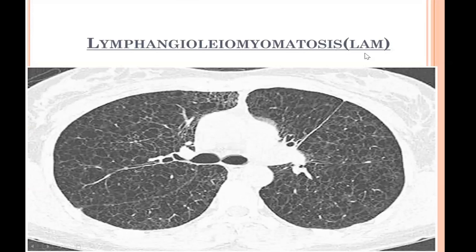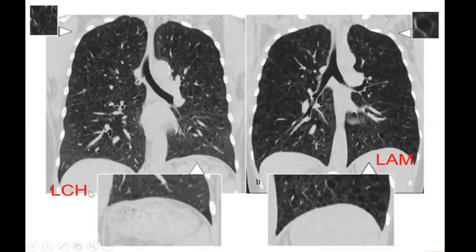Lymphangioleiomyomatosis is a condition commonly seen in females and in patients with tuberous sclerosis, producing multiple thin-walled cystic spaces distributed throughout the lung parenchyma including the lung bases and costophrenic angles. Comparing Langerhans cell histiocytosis and LAM: LCH shows irregular, bizarre-shaped cysts in the upper and middle lobes with sparing of basal segments and costophrenic angles, while LAM shows smooth-walled cysts distributed throughout the lung parenchyma including the costophrenic angles.